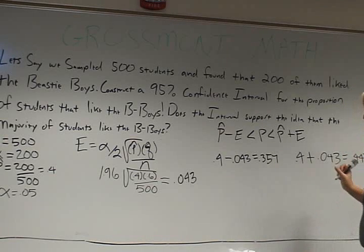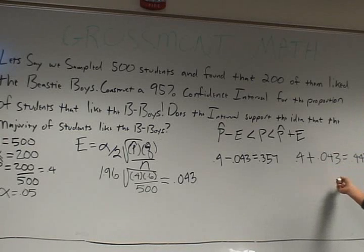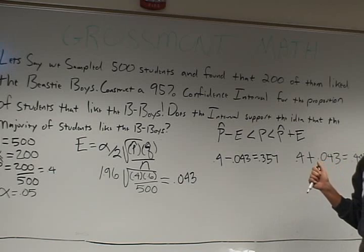Since 0.5 does not fall between these two numbers, the interval does not support the idea that the majority of students like the Beastie Boys.